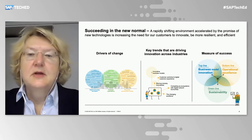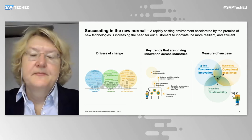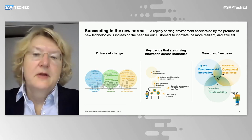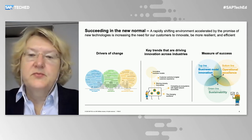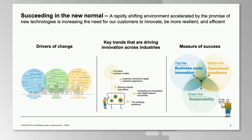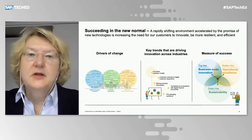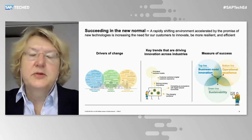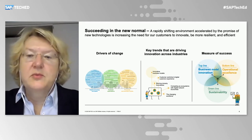We also see key trends driving innovation across industries. Innovative business models and customer centricity are important for enterprises to consider. We see industry boundaries blurring — when you look at the automotive industry, you might ask yourself, is this a car manufacturer or a software company, or both? We see complexity with the ecosystem, where the partner of today is also the competitor of tomorrow.